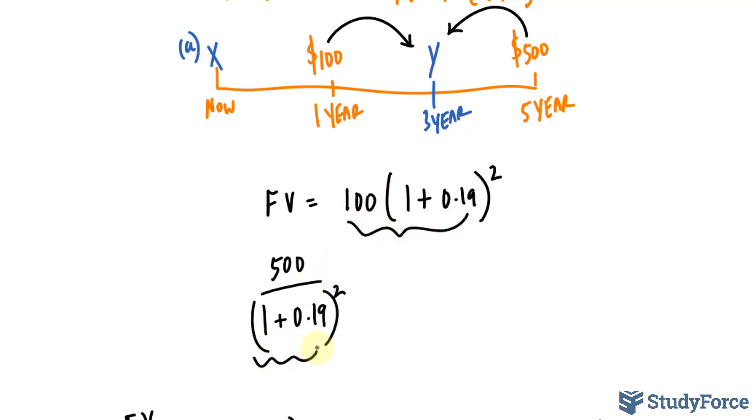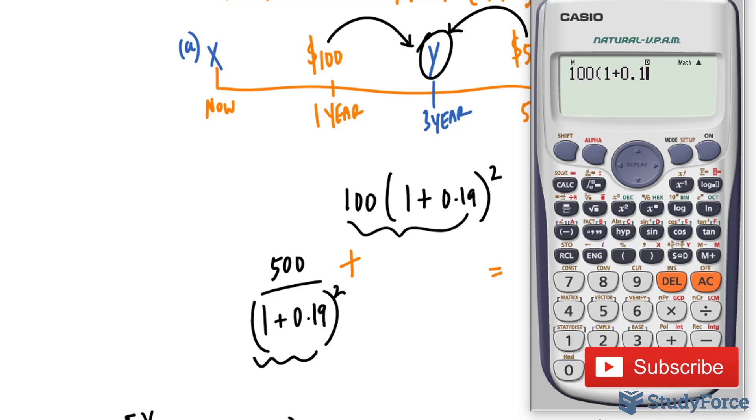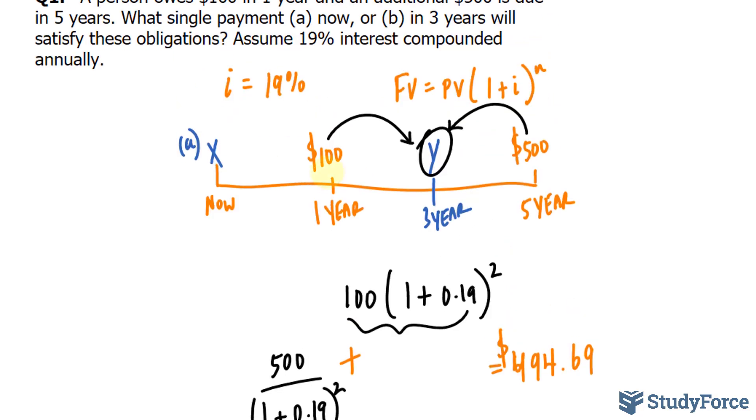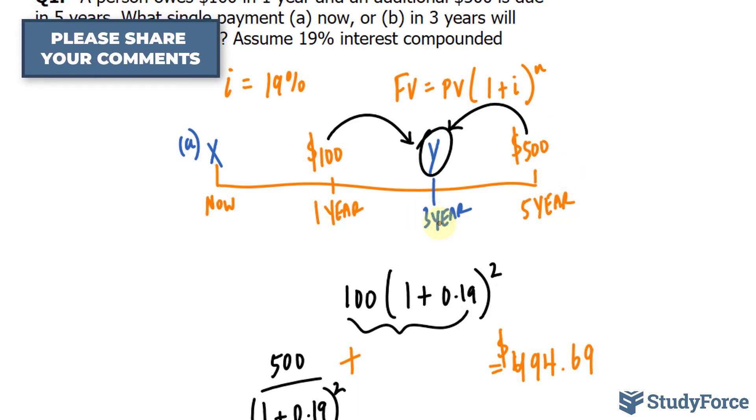So this thing plus that thing will give us y. Let's go ahead and use our calculator. So 100 times 1 plus 0.19 raised to the power of 2, plus 500 divided by 1 plus 0.19 raised to the power of 2. And we end up with $494.69. So that will replace these two values if we choose to pay three years from today at that focal date.